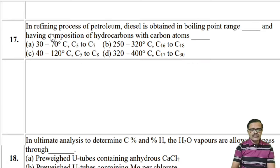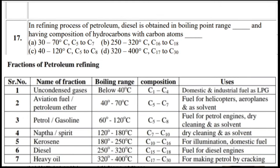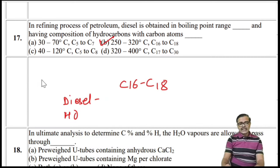Diesel is obtained in the boiling point range of 250 to 320°C with C16 to C18 carbon atoms. Remembering the sequence — heavy oil, diesel, kerosene, naphtha — the correct option is the second.